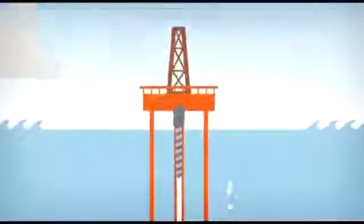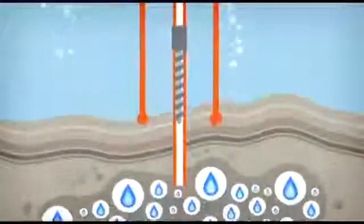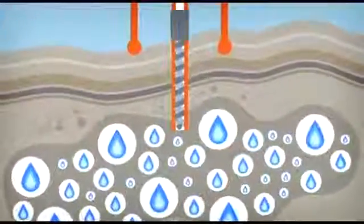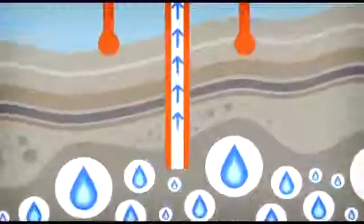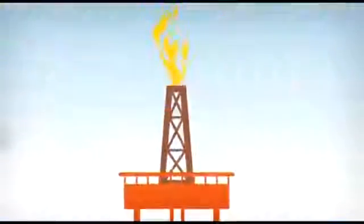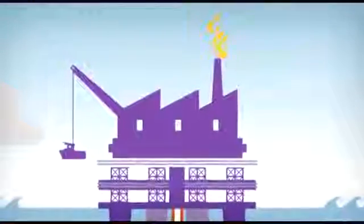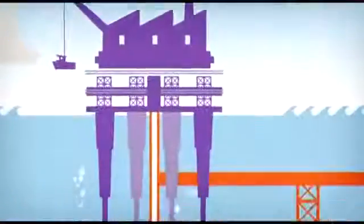Wells are drilled from a drilling rig to confirm the presence and quantity of gas in the rock, which travels up lengths of pipe once reached. If there is enough gas, the drilling rig is replaced by a production platform to collect and send it to the shore under pressure via pipeline.